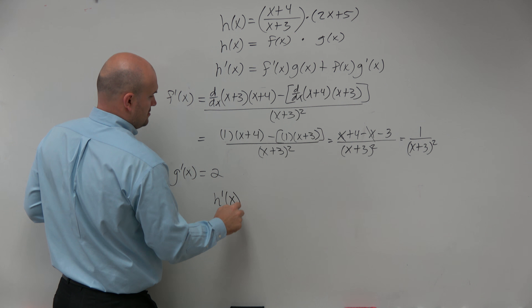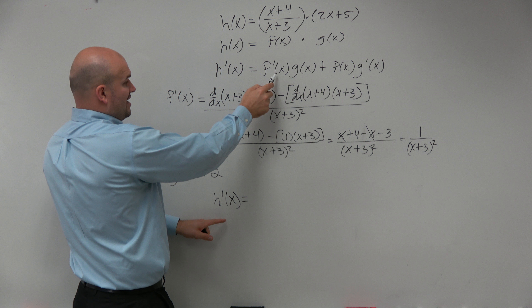Now we have f prime of x and g prime of x, and that's all we need for the product rule. To find h prime of x, it's simply going to be f prime of x — which we found to be 1 over x plus 3 squared — times g of x, which is 2x plus 5. Plus f of x — which is x plus 4 over x plus 3 — times g prime of x, which is just 2.